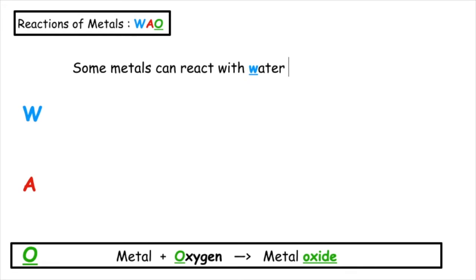Some metals can react with water, acid, or oxygen. The word equation for when metals react with oxygen is metal plus oxygen produces a metal oxide.